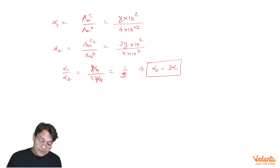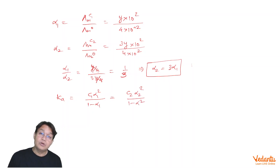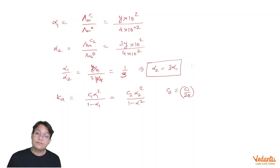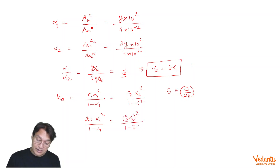The second condition is that the concentration is diluted 20 times. We use the equation: Ka = c1·alpha1² / (1 − alpha1) = c2·alpha2² / (1 − alpha2), where c2 = c1/20. Substituting c2 = c1/20 and alpha2 = 3·alpha1, we get: 20·alpha1² / (1 − alpha1) = (3·alpha1)² / (1 − 3·alpha1).